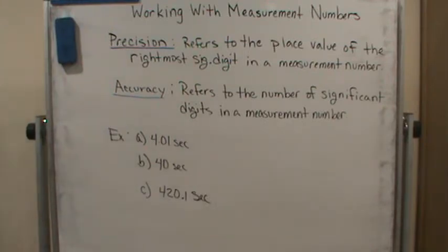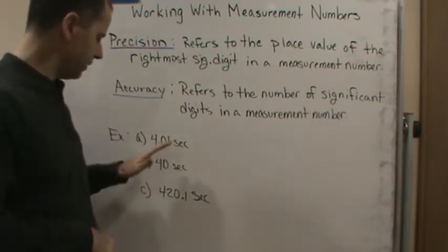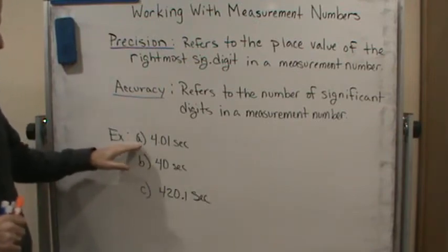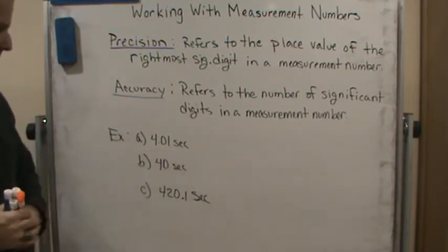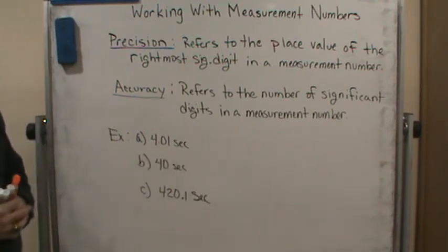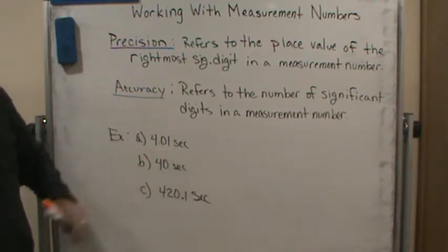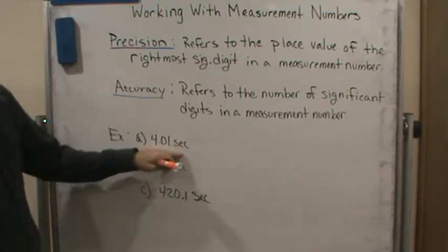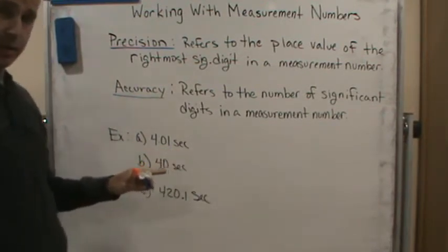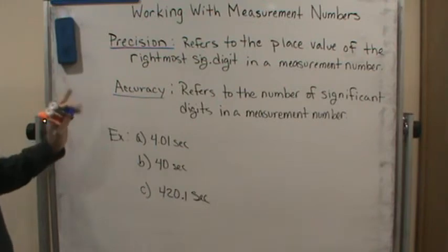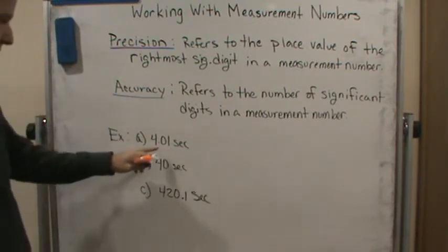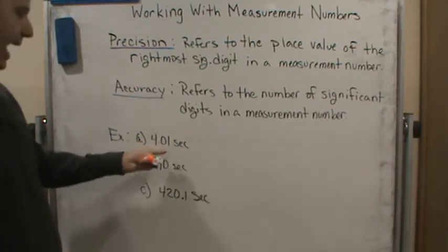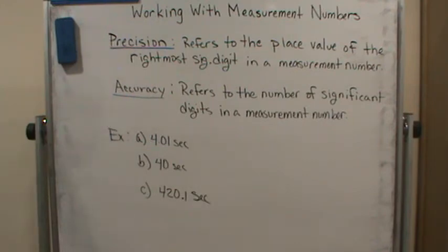Here's an example. For letter A, we have 4.01 seconds. The precision is that it's measured out to the hundredth of a second — so this is precise to the hundredth place. As for accuracy, since the zero is significant here, all three digits are significant digits, so this is accurate to three significant digits.